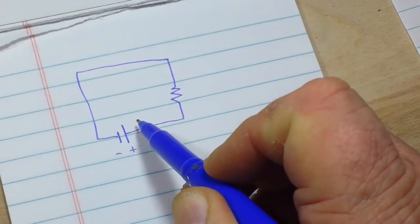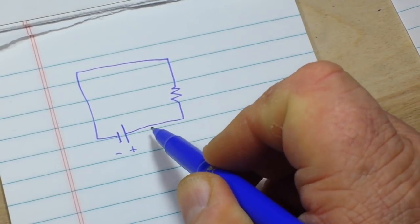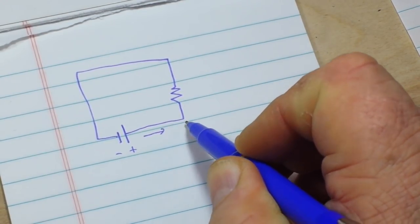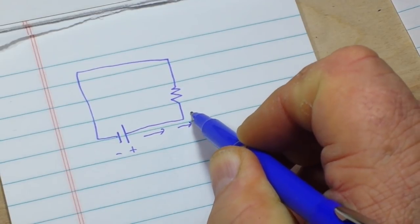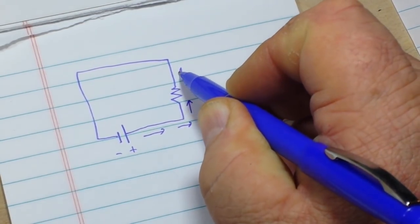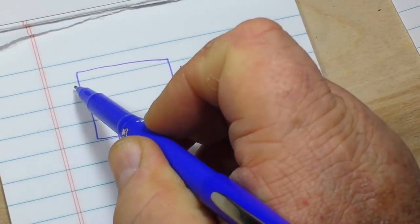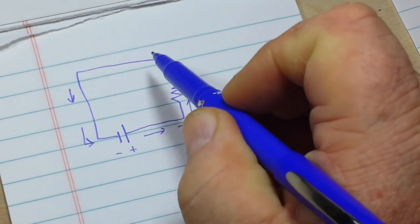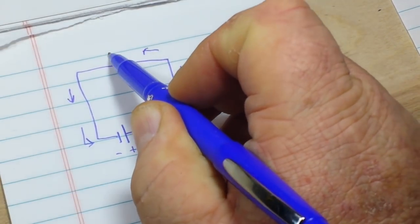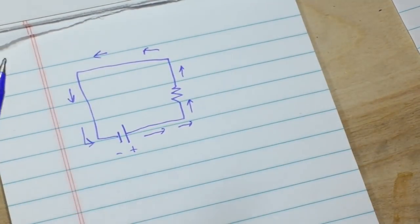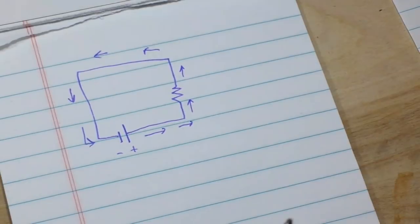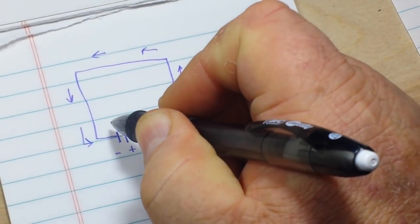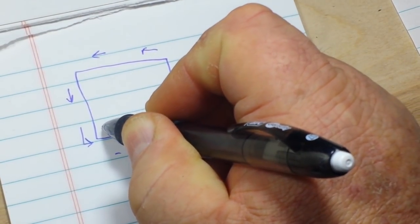Now when we connect this, we know that current flows in this direction. Current flows from the positive side of the battery through our circuit, returning to the negative side of the battery.